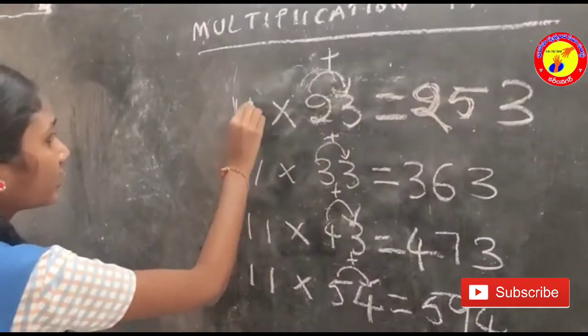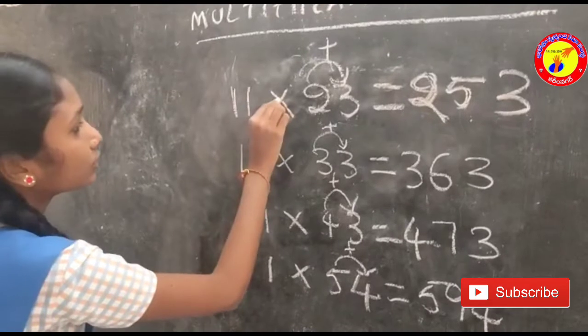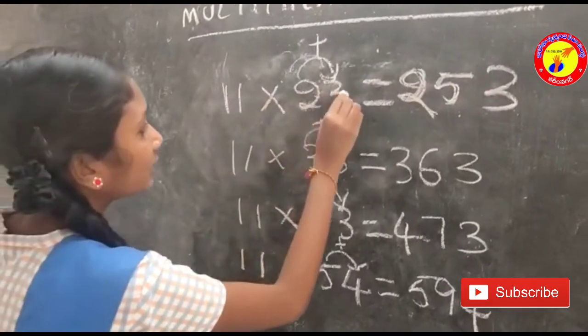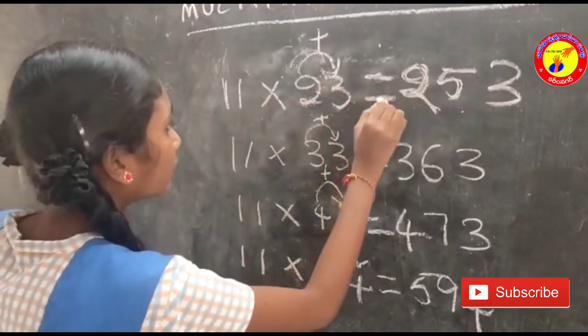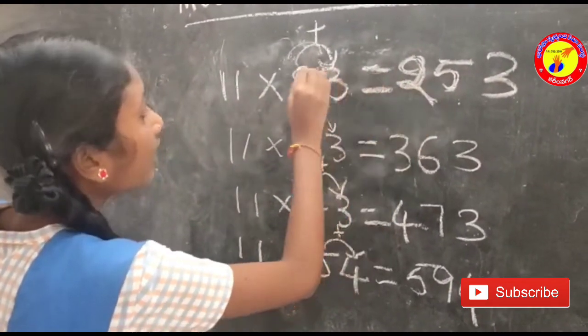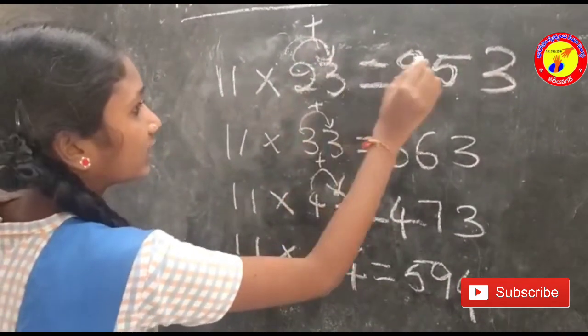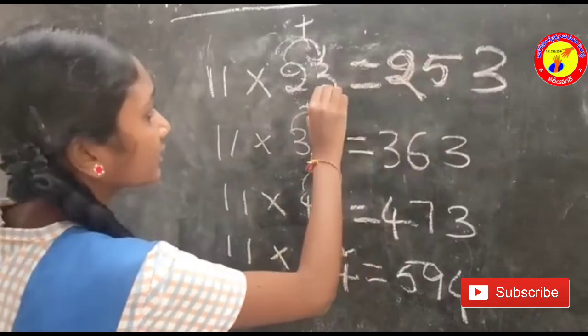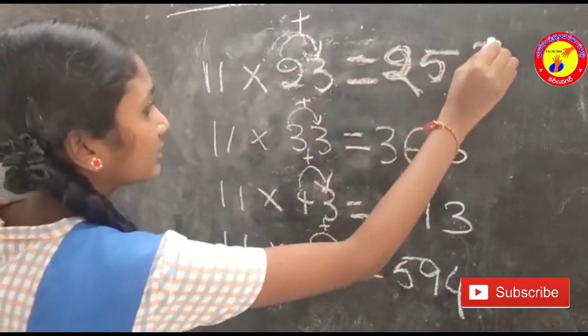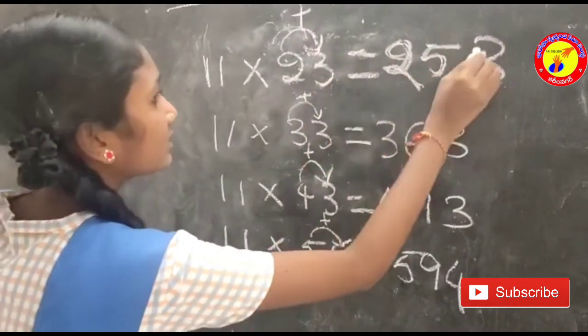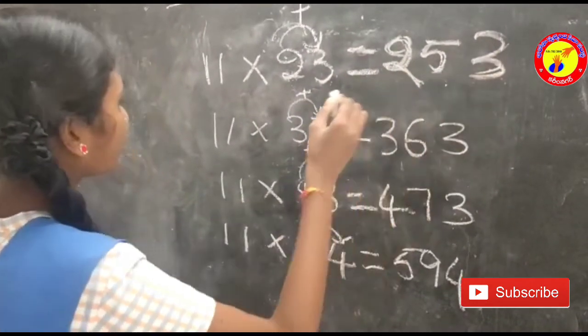11 into 23 is equal to: this 2 is here, 2 plus 3 is 5, and this 3 is here. So the answer is 253.